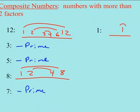12 had 1, 2, 3, 4, 5, 6 factors. Is that more than two factors? Yes. So we'd say 12 is composite. 8 had four factors. Is that more than two? Yes. So 8 would also be composite.